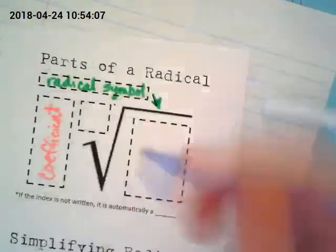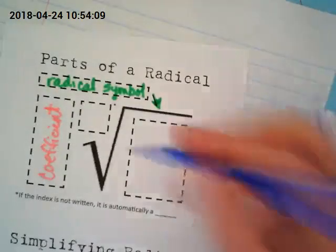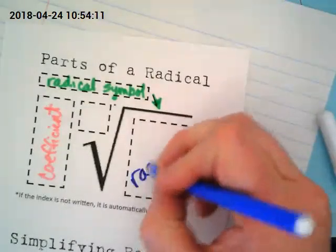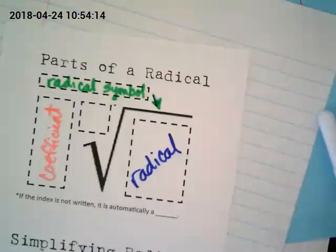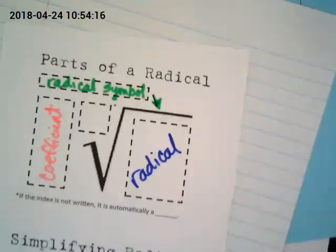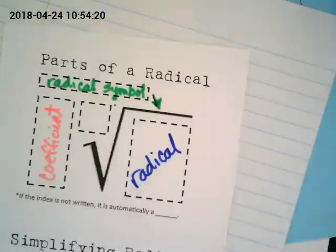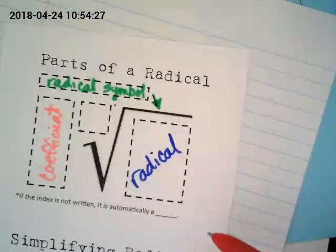What is inside what you guys have called a square root is called a radicand. And this is the part that's really new for you guys, because you've been working with these without knowing their names.